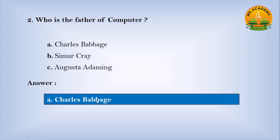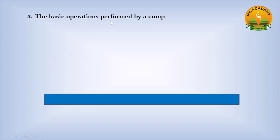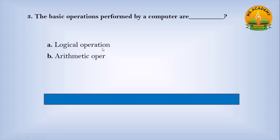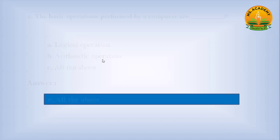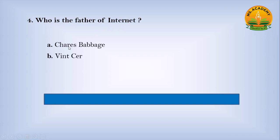The basic operations performed by a computer are — option A: logical operation, option B: arithmetic operation, option C: all of the above. Answer: C — all of the above, meaning logical and arithmetic operations. Who is the father of the internet? Option A: Charles Babbage, option B: Tim Berners-Lee, option C: Martin Cooper. Answer: B — Tim Berners-Lee.